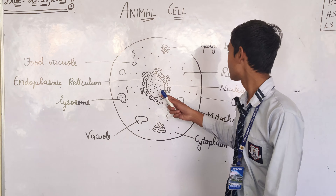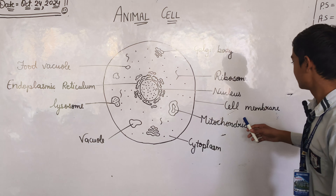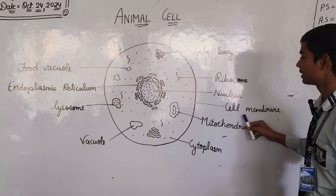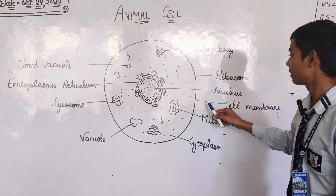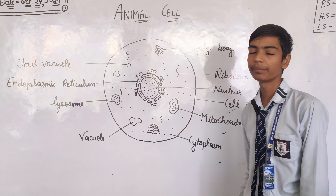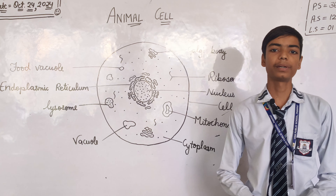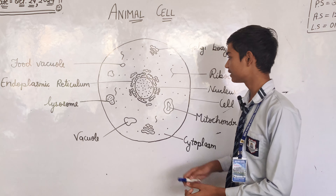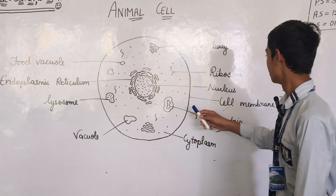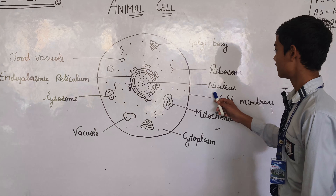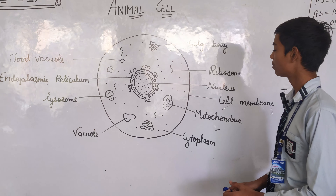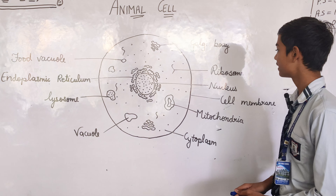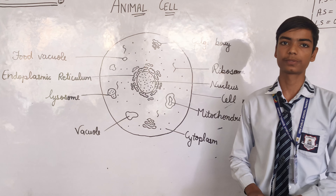This is the diagram of a cell and this is cell membrane. The function of cell membrane is to control what enters and leaves the cell. And this is nucleus — nucleus is the master controller of the cell and it contains the DNA of the cell.